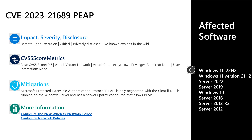Let's jump into the first vulnerability from today's set: CVE-2023-21689. This is a vulnerability in the Microsoft Protected Extensible Authentication Protocol. It was privately disclosed to Microsoft with no known exploits in the wild. This has a severity rating of critical and a base CVSS score of 9.8 out of 10. The attack vector is over the network, the attack complexity is low, privileges required is none, and user interaction is also none.